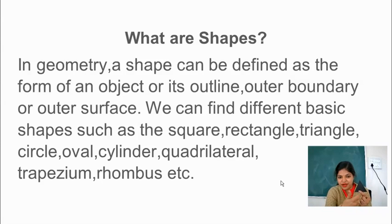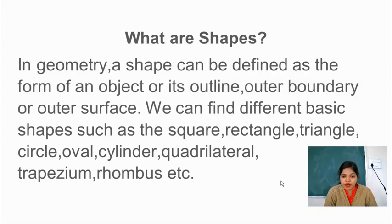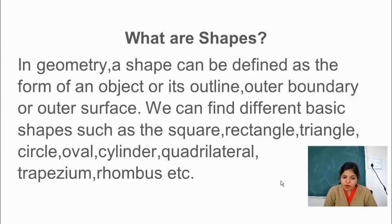So in fact we can find different basic shapes such as the square, rectangle, triangle, circle, oval, cylinder, quadrilateral, trapezium, rhombus, etc. There are so many shapes around us. You can see shapes everywhere.